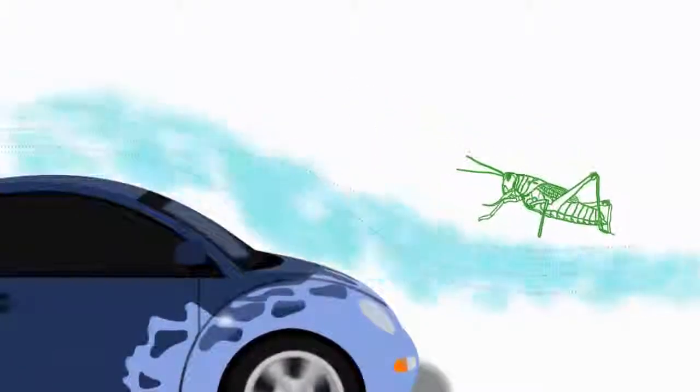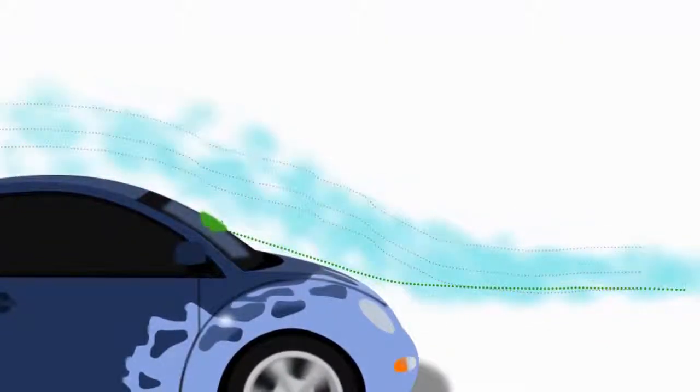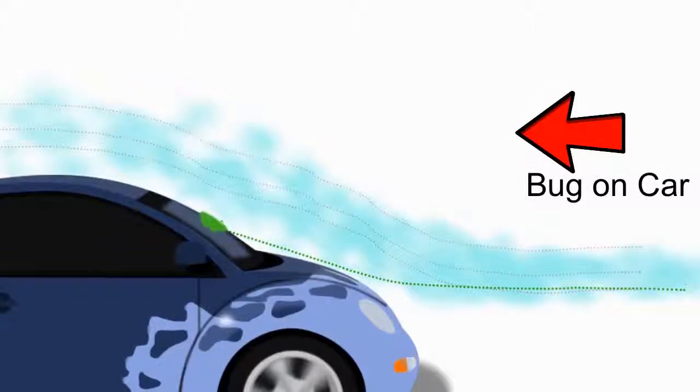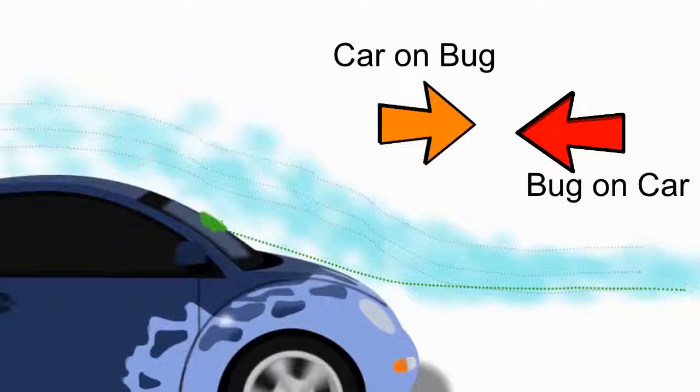Think about what forces are at play here and let's label them. First, as we know, we have the force that the bug exerts on the car. And in reaction, we have the force that the car exerts on the bug. These forces are caused by the interaction between two objects, in this case the car and the bug.